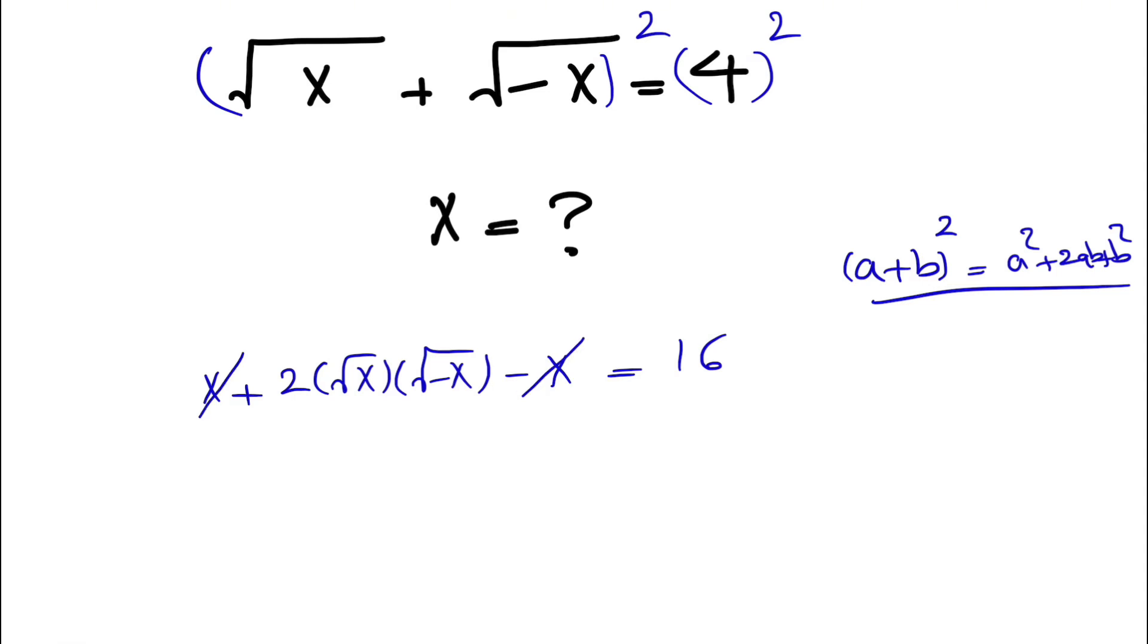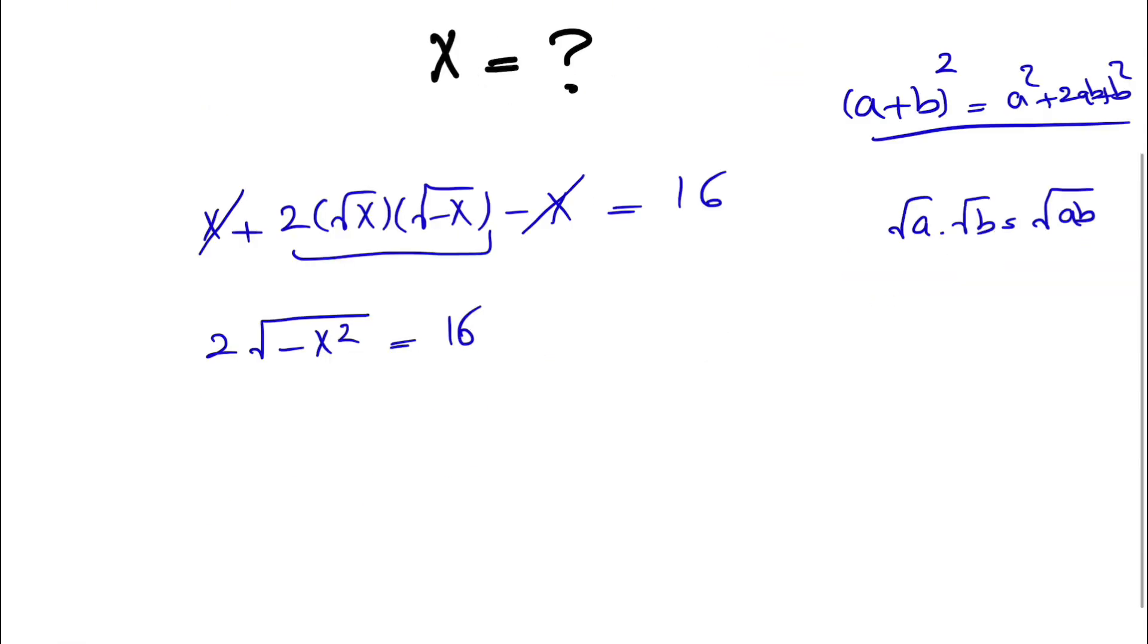The x terms cancel out. We have square root of x times the square root of minus x, which equals the square root of x times minus x, or the square root of negative x². So we have 2 times the square root of negative x² equals 16. Dividing both sides by 2, we get the square root of negative x² equals 8.